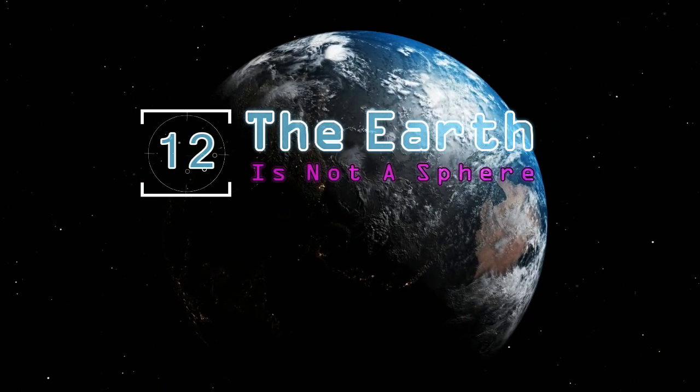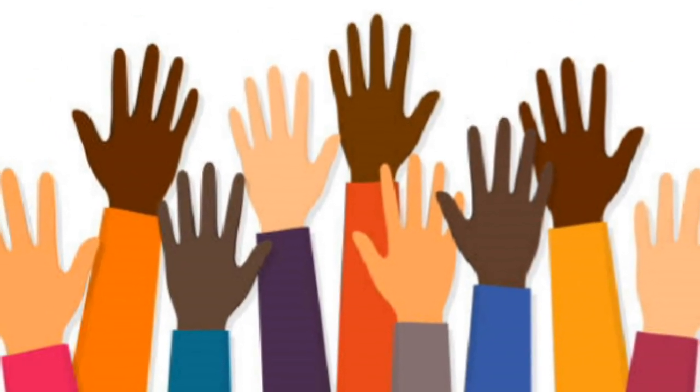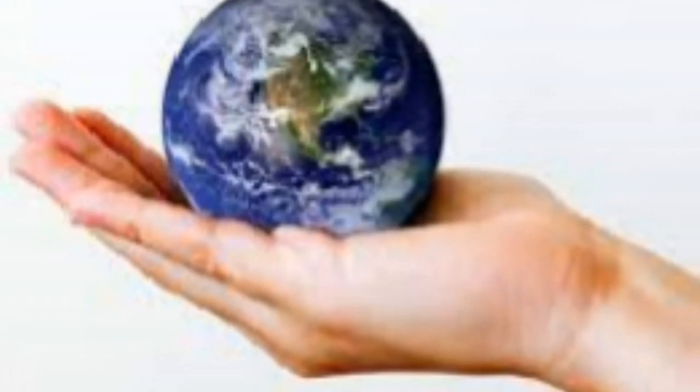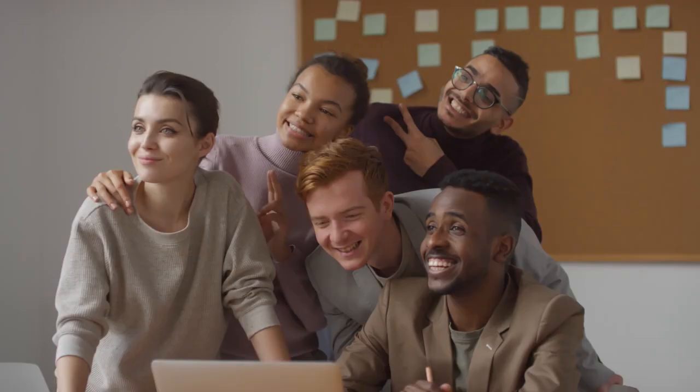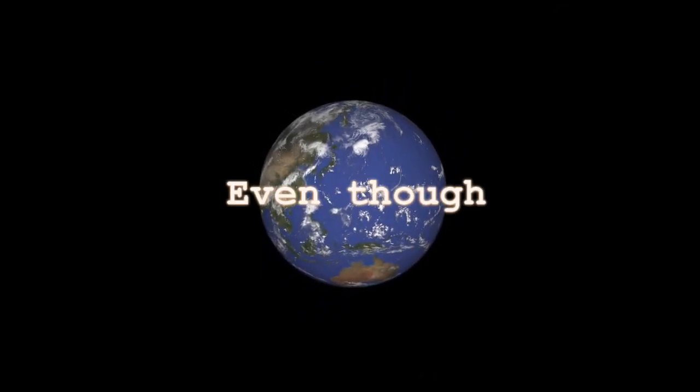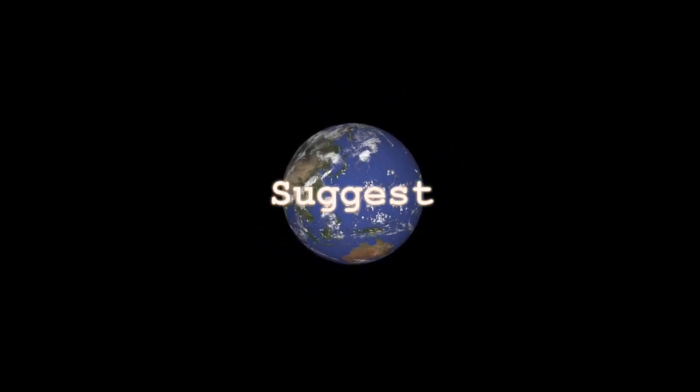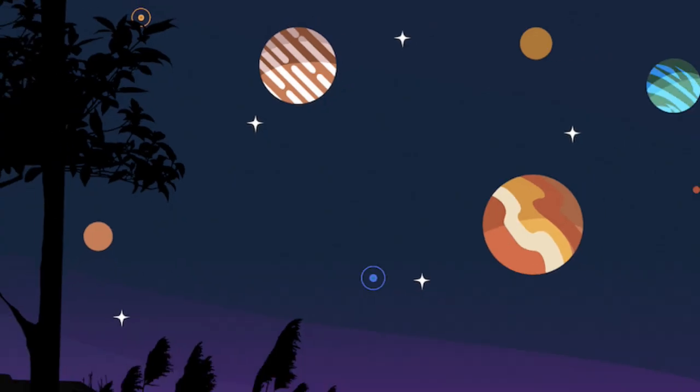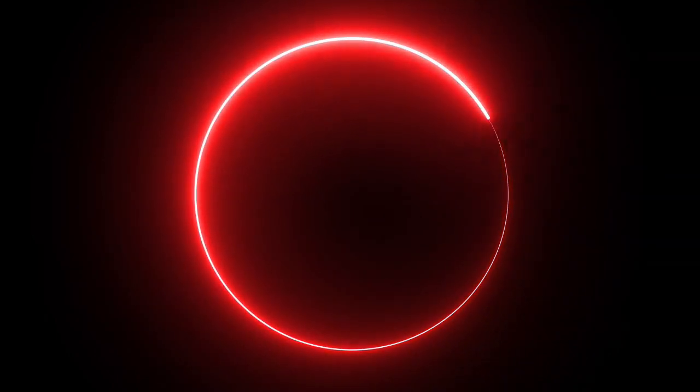The Earth is not a sphere. Hands up if you've never described the Earth as a perfect sphere. No hands? Just what we expected. However, the truth is, even though pictorial evidence suggests otherwise, the Earth and many other planets and moons are not perfectly round.